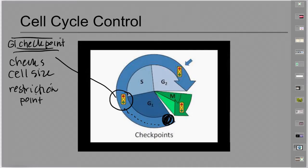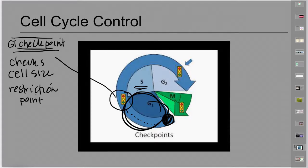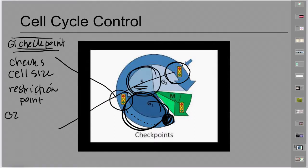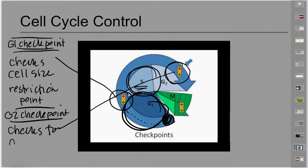Following the restriction point, if the cell gets the signal to divide, it moves into the S phase — active cell division making more DNA. The cell has to be big enough and there has to be a signal to push it into making more DNA because another cell is needed. The next biological checkpoint is the G2 checkpoint, which checks for DNA integrity — it makes sure that the DNA is accurately replicated.